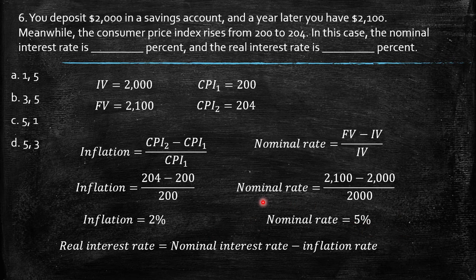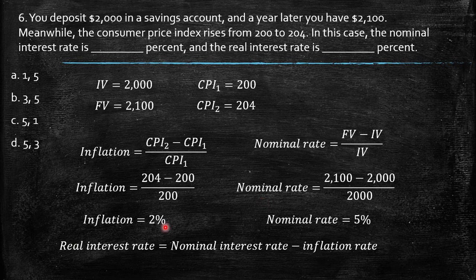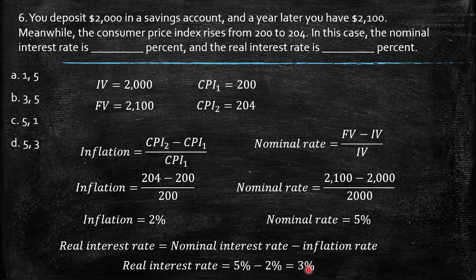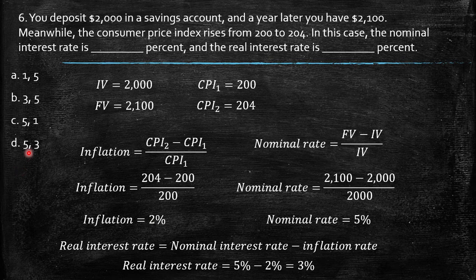What about the real interest rate? Remember, as we defined throughout the chapter, the real interest rate should be nominal interest rate minus inflation rate. So you already have both, so 5 minus 2 is exactly equal to 3. So then we can finish with the value D, 5 and 3.